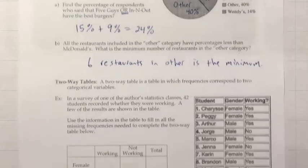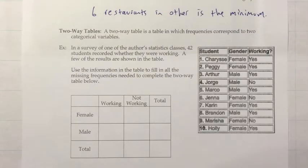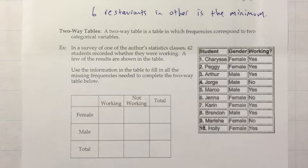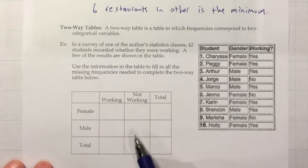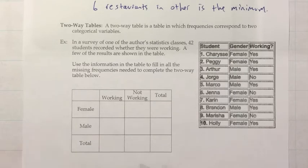Let's move on to two-way tables. A two-way table is a table in which frequencies correspond to two categorical variables. In a survey of one of the author's statistics classes, 42 students recorded whether they were working, and a few of the results are shown in a table. We need to fill in all the missing frequencies using a tally mark method.